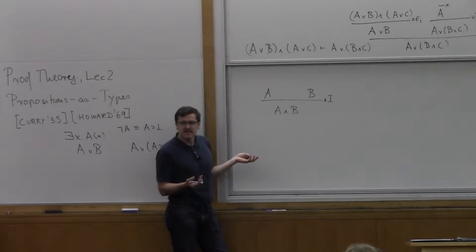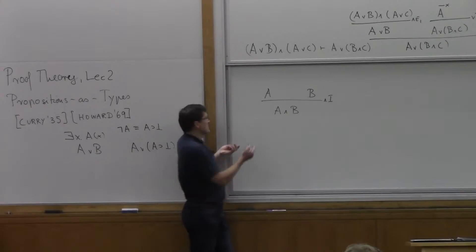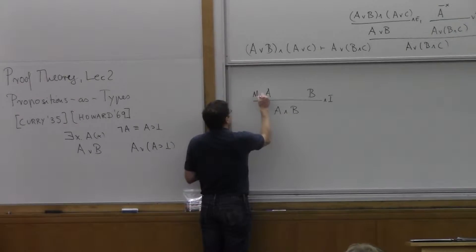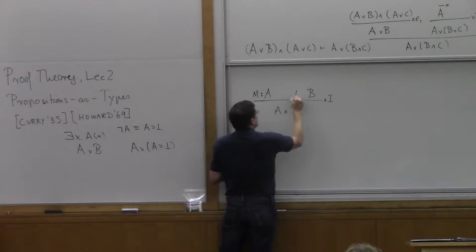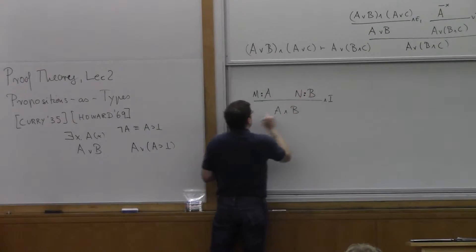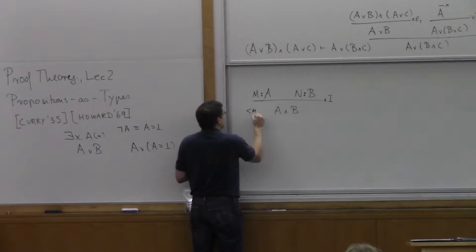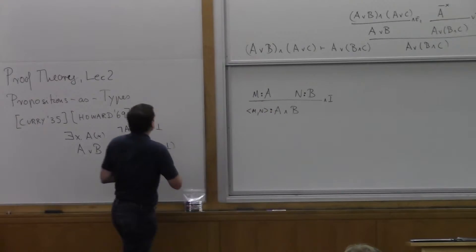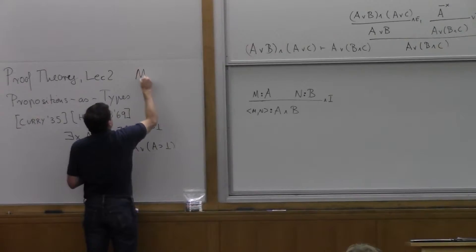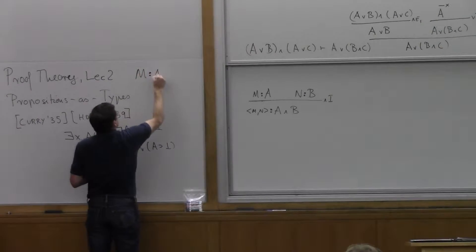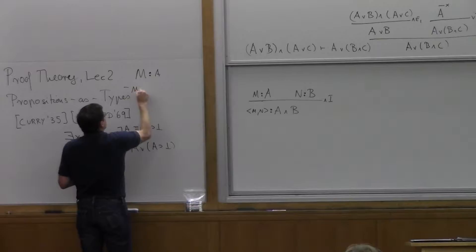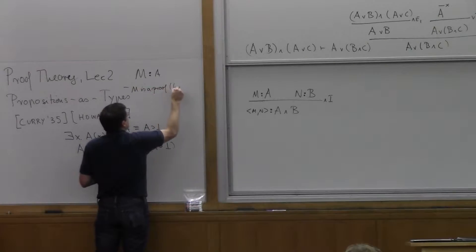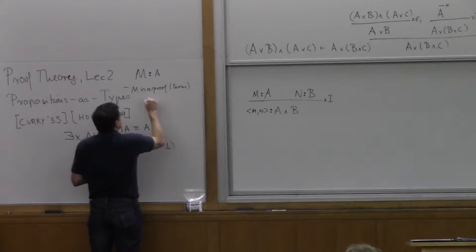That's all what this rule tells us. So I'm going to write this: I write M colon A and N colon B, and I write the pair MN is going to be a proof of A and B. So my basic judgment is now M colon A, and it means that M is a proof of A, or a proof term of A.